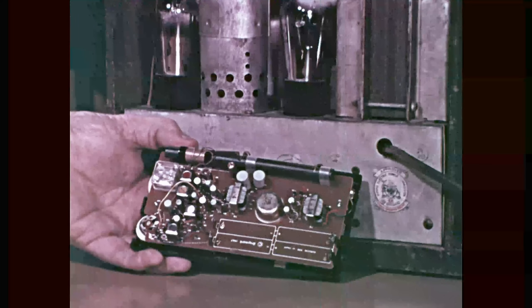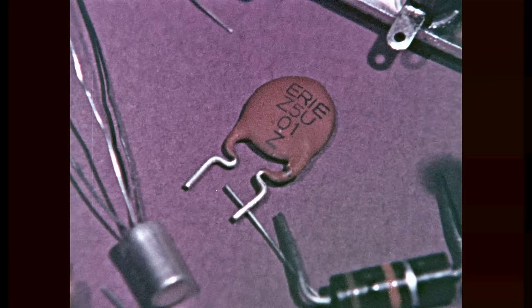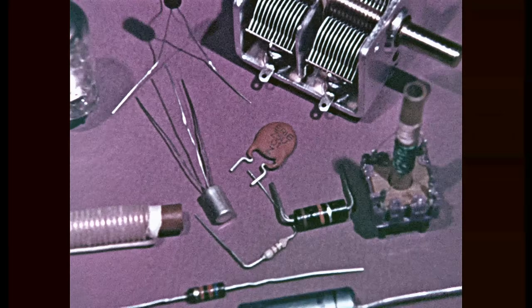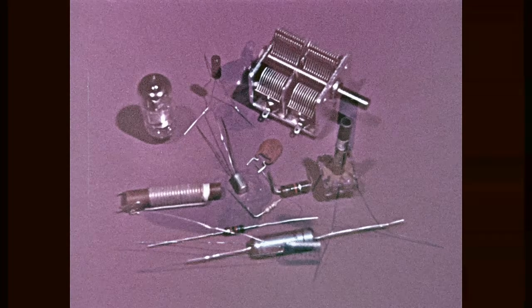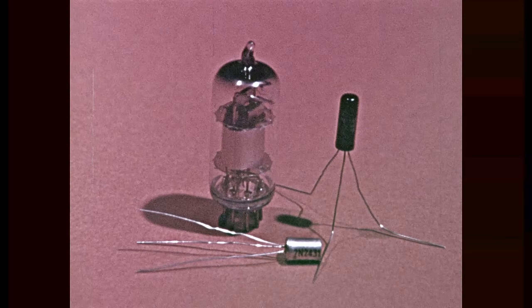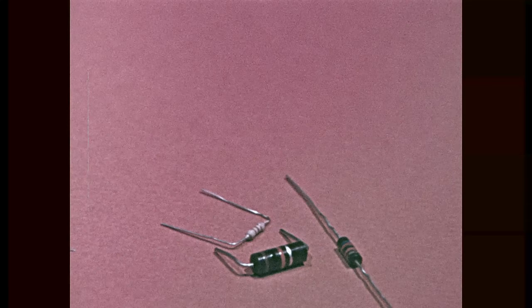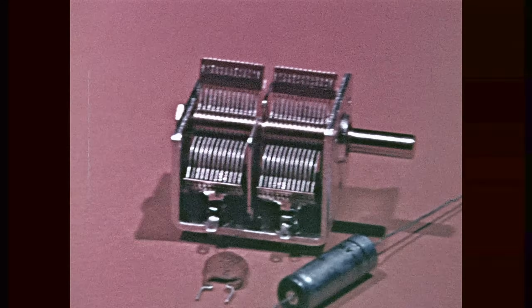Radio receivers gradually developed and became more efficient with small multipurpose tubes and transistors. In a radio circuit, only four basic types of components are used: tubes or transistors, resistors, capacitors, and inductors.